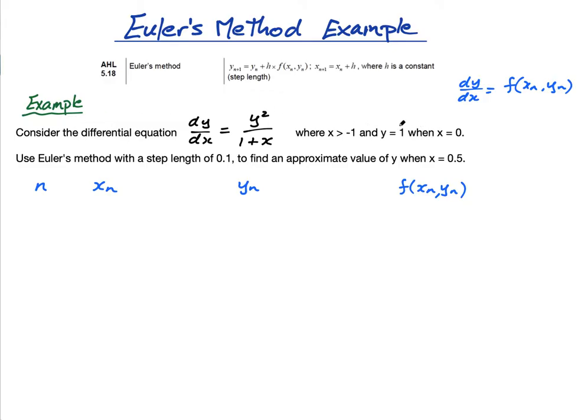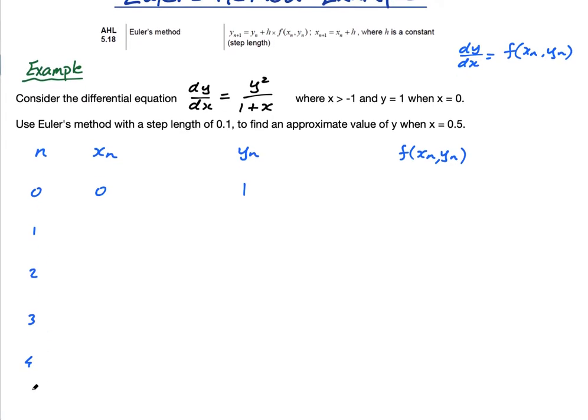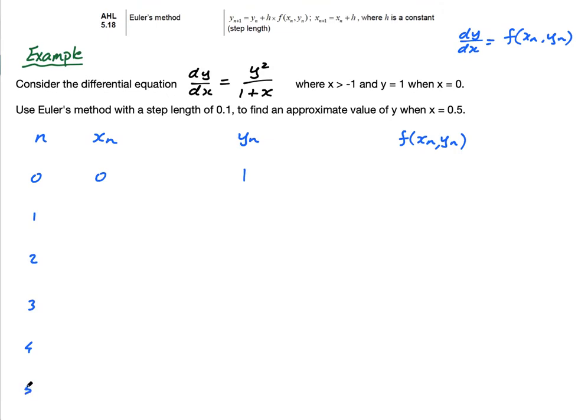So, it gives us the initial condition. So, when x is 0, y is 1. So, we're going to have our initial condition, when x is 0. So, n is 0. So, this is like my initial condition, my 0th step, if you like. x is 0, and y is 1. Now, I can go down here. I'm going to be doing the first step, second step, third step, fourth step. I'll need a bit more space. Fifth step.